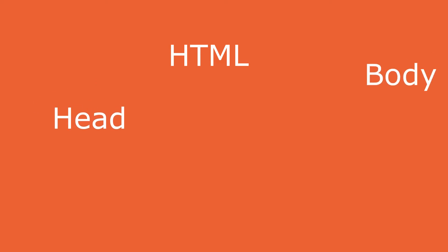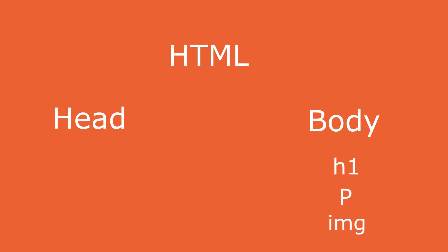The next one is 'model.' Model is nothing but the structure of your page. Consider the same example — starting with HTML, inside which we have two objects called head and body. This head and body come under HTML. HTML is the parent, under which we have two child objects: head and body. Coming to the body, again we have multiple objects — H1, paragraph tag, image tag, and so on. The whole structure is called the model.